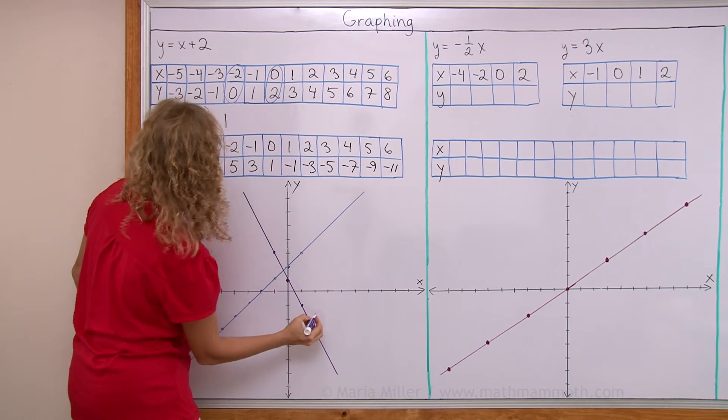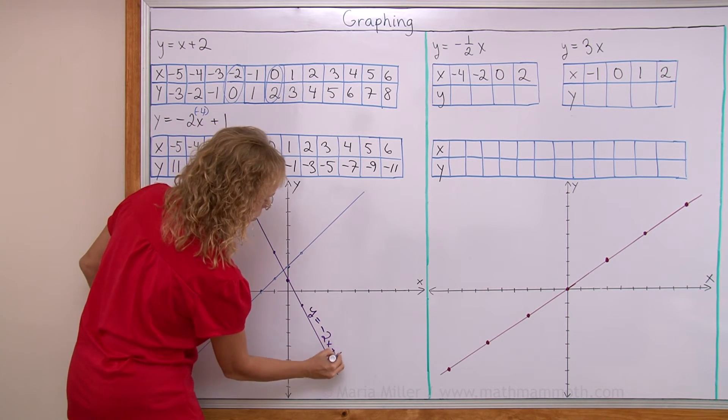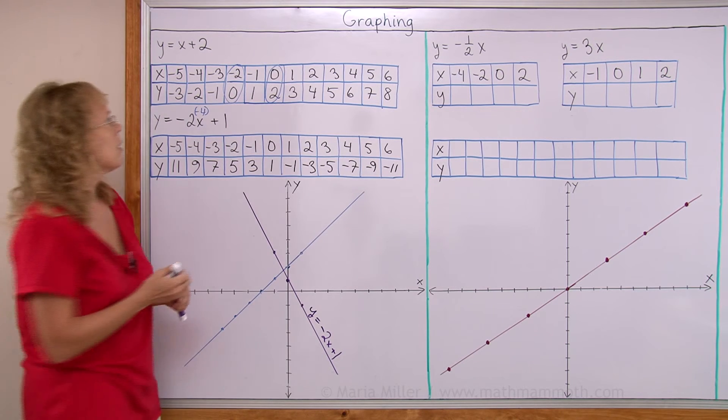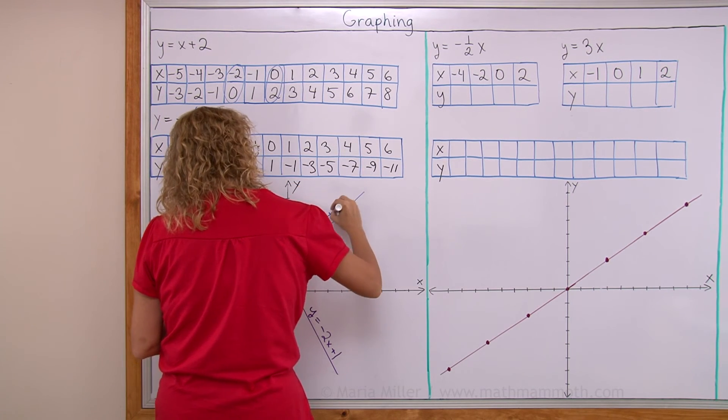There. So this is the graph of the equation y equals negative 2x plus 1, just like this is the graph of y equals x plus 2.